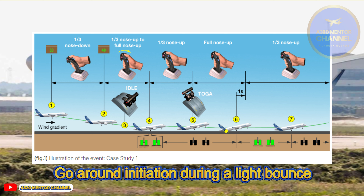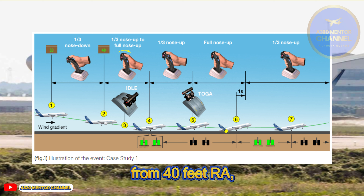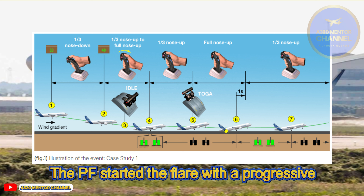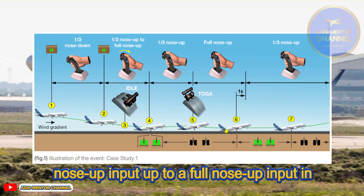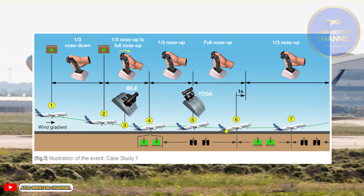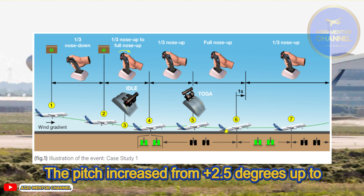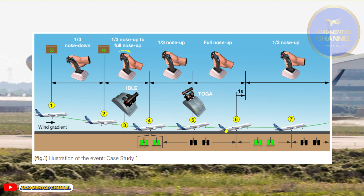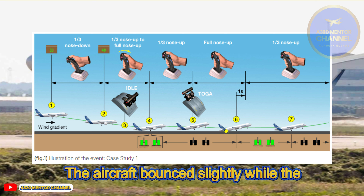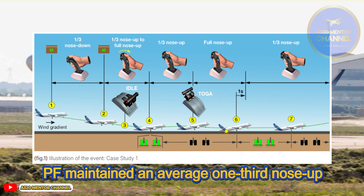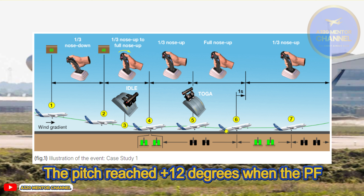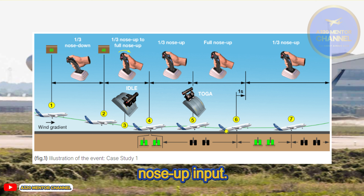Go-around initiation during a light bounce. From 40 feet RA, the PF started the flare with a progressive nose-up input up to a full nose-up input in the last 10 feet. Thrust levers were retarded to idle at 10 feet RA. The pitch increased from plus 2.5 degrees up to plus 9 degrees at touchdown. The aircraft bounced slightly while the ground spoilers started to extend and the PF maintained an average one-third nose-up input for 2 seconds.